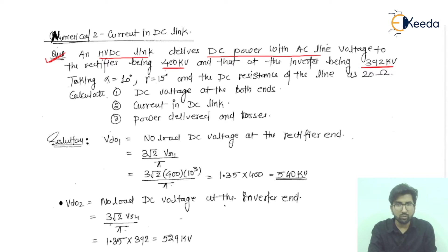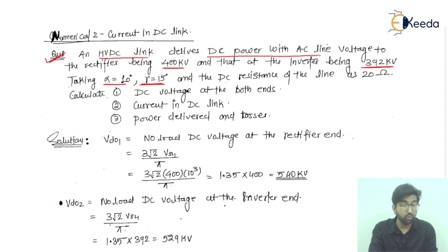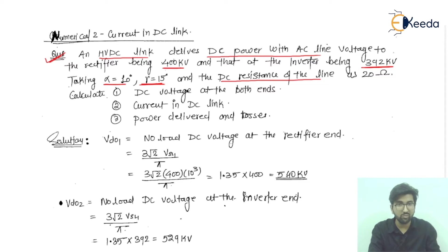It is also saying that alpha is equal to 10 degrees and gamma, which is the extinction angle, is given as 15 degrees. The DC resistance of the line is given as 20 ohms.